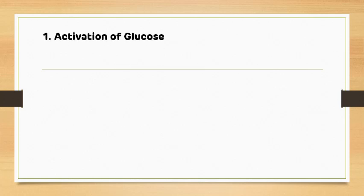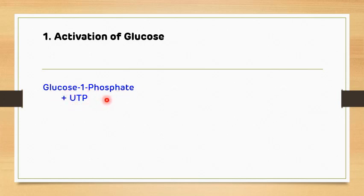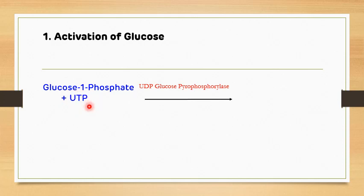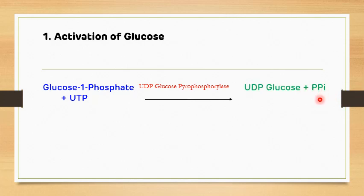The first step of glycogenesis is the activation of glucose. Glucose-1-phosphate, coming from the glycolytic pathway — where glucose is converted to glucose-6-phosphate which is then isomerized to glucose-1-phosphate — reacts with uridine triphosphate in the presence of UDP-glucose pyrophosphorylase. The glucose molecule attaches to UDP and one phosphate molecule is removed, resulting in the synthesis of UDP-glucose and elimination of one molecule of pyrophosphate.